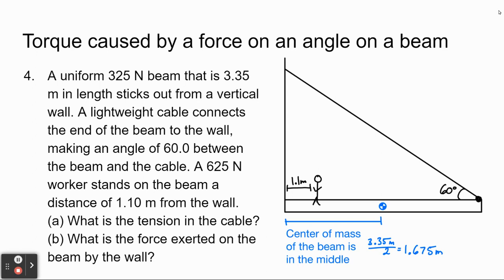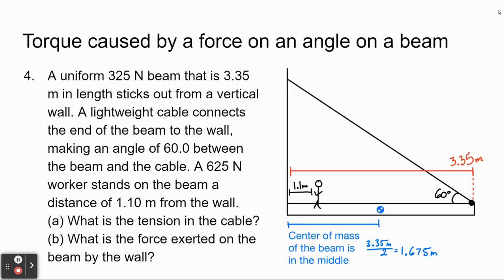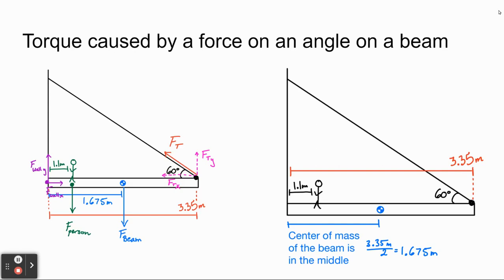Now I'm going to draw forces on this beam and recognize all the different forces happening. The wall is going to push to the right on the beam because the cable pulls it to the left — that's needed to prevent acceleration. I'll assume the wall also pushes up; if we get a negative number, it means it actually pushes down. We also have the force from the person pushing down, the weight of the beam pushing down, and the tension in the cable.